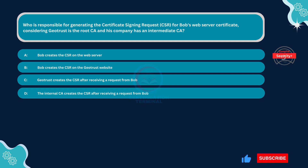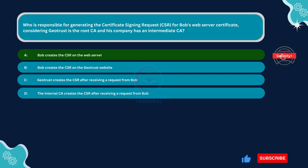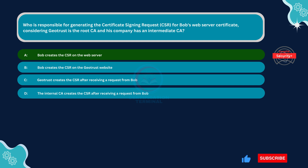The correct answer is Option A: Bob creates the CSR on the web server. Bob is responsible for generating the certificate signing request for his web server certificate. This is typically done on the web server itself using software tools or commands provided by the server platform. Bob needs to generate the CSR containing his server's public key and other identifying information, which will be used by the CA to create the digital certificate.